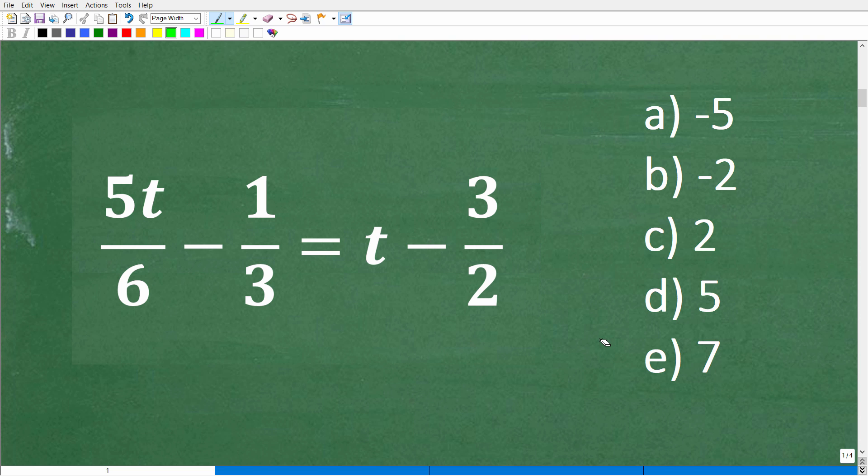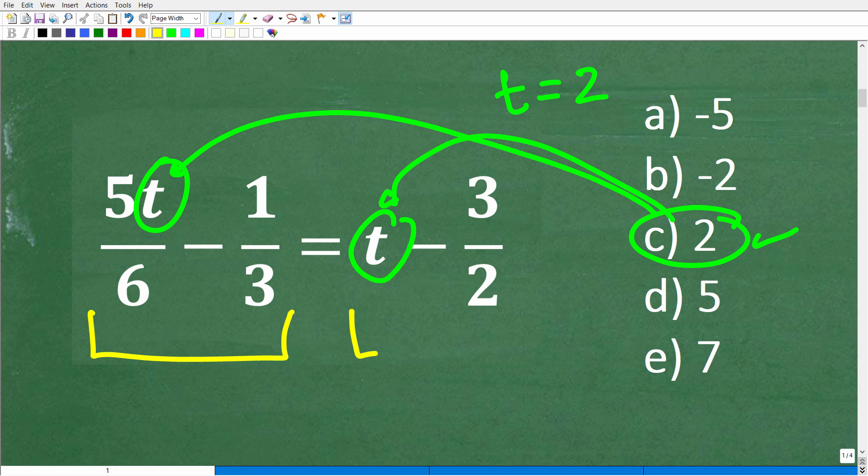How could we use these solutions here to figure out which one is right? Maybe we should plug in a value. If t is equal to, for example, 2, that would be our choice c right here. We could take this value 2 and plug it in for this t and plug it in for this t, and then see if the left-hand side equals the right-hand side. Because if we plug in a 2 for t here and t here, and then we do this math, the resulting math is basic arithmetic.